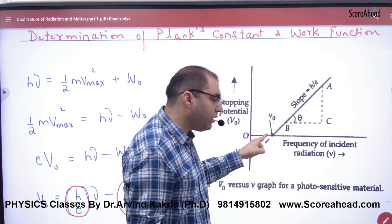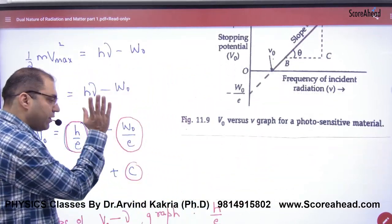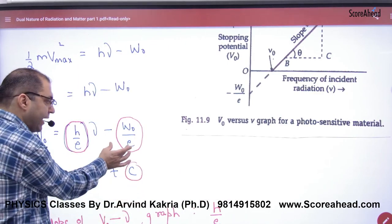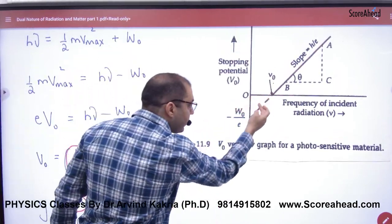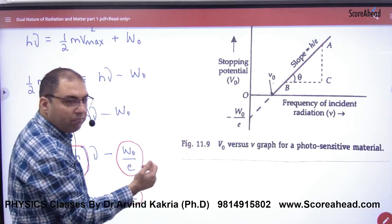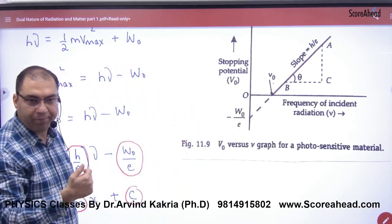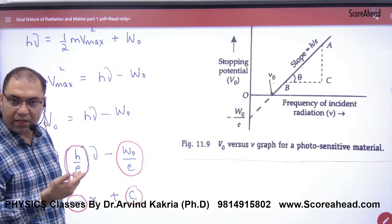If you plot it, the graph will become this, and the intercept will be negative. For medical students, see: negative intercept means it will be cut here at minus W₀ by E. Clear? This is the graph.